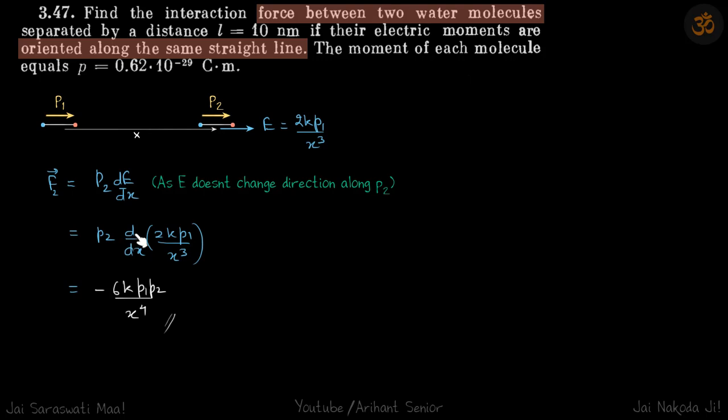So P2 times d by dx of 2KP1 by X cube, which will give our answer minus 6KP1P2 by X power 4.